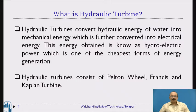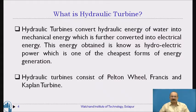Hydraulic turbines convert hydraulic energy of water into mechanical energy, which is further converted into electrical energy. This energy obtained is known as hydroelectric power, which is one of the cheapest forms of energy generation. It is also called clean energy. Hydraulic turbines consist of the Pelton wheel, Francis turbine, and Kaplan turbine.